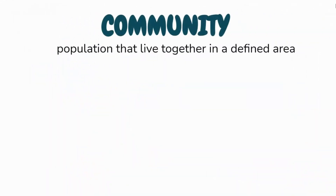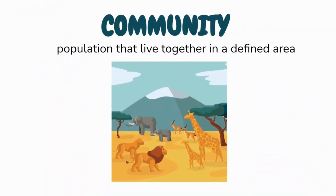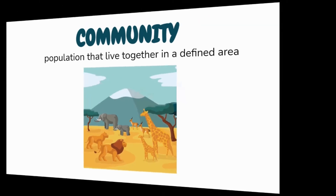Community is a group of populations that live together in a defined area. A community consists of all different species within a certain area. The population of lions in Kenya, plus the population of giraffes, elephants, and all other species in that area, add up to the community.